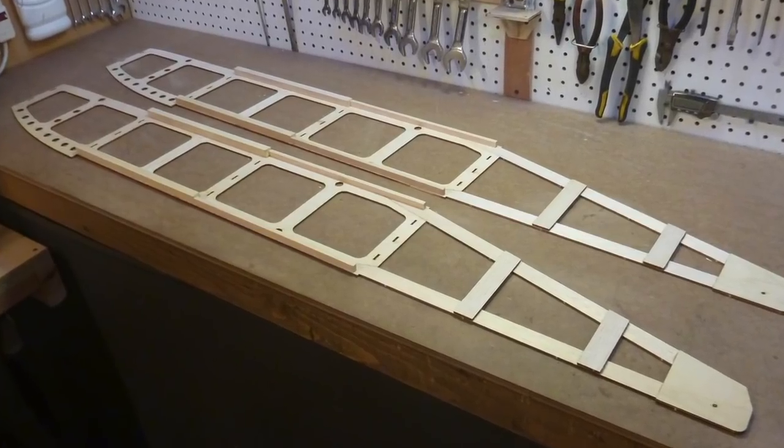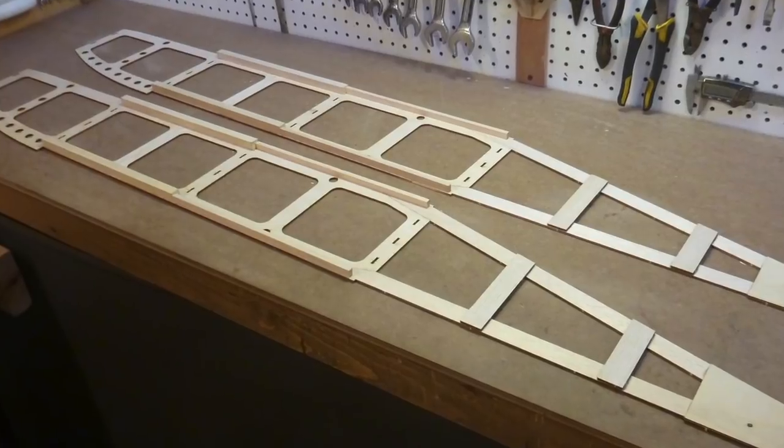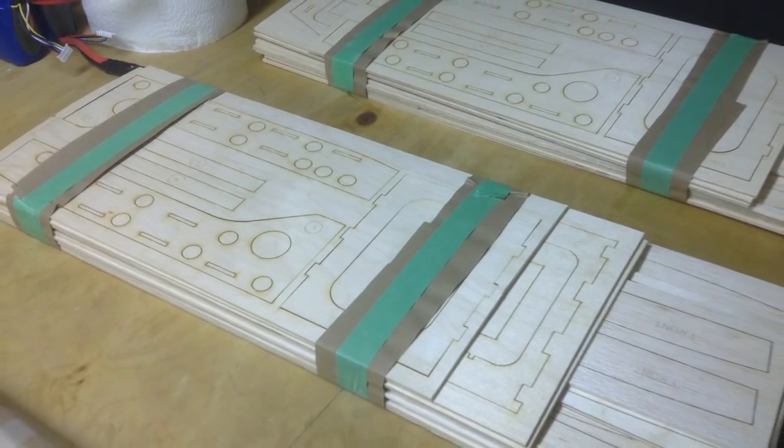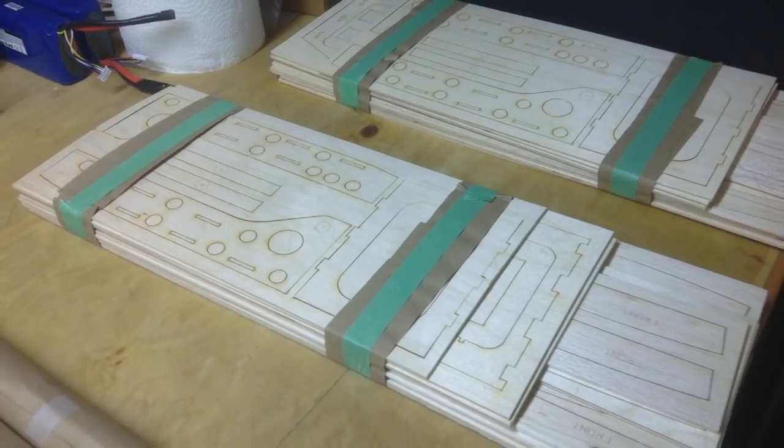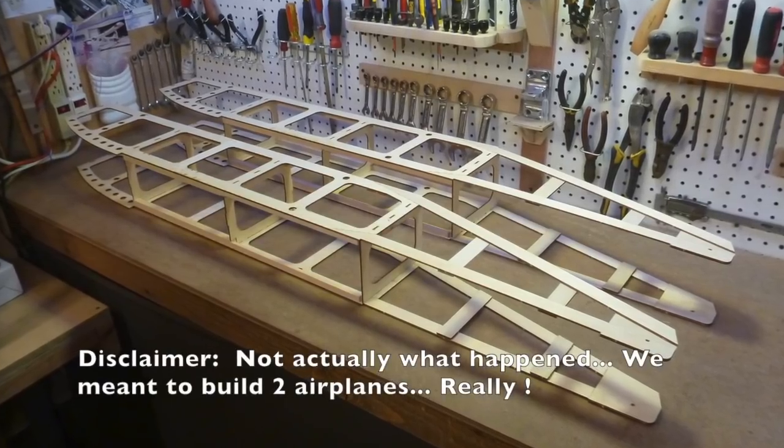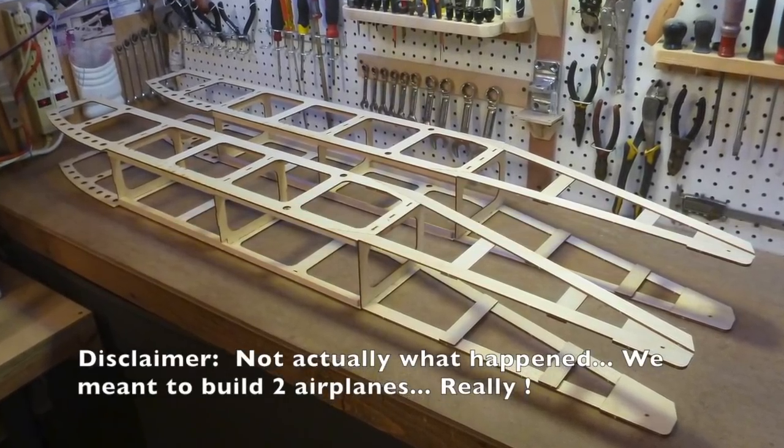If you skipped ahead and built two left sides, it's okay. Just send an email to Wayne and order up a second kit. From now on, you may see a second V2 airframe in the background of this video.